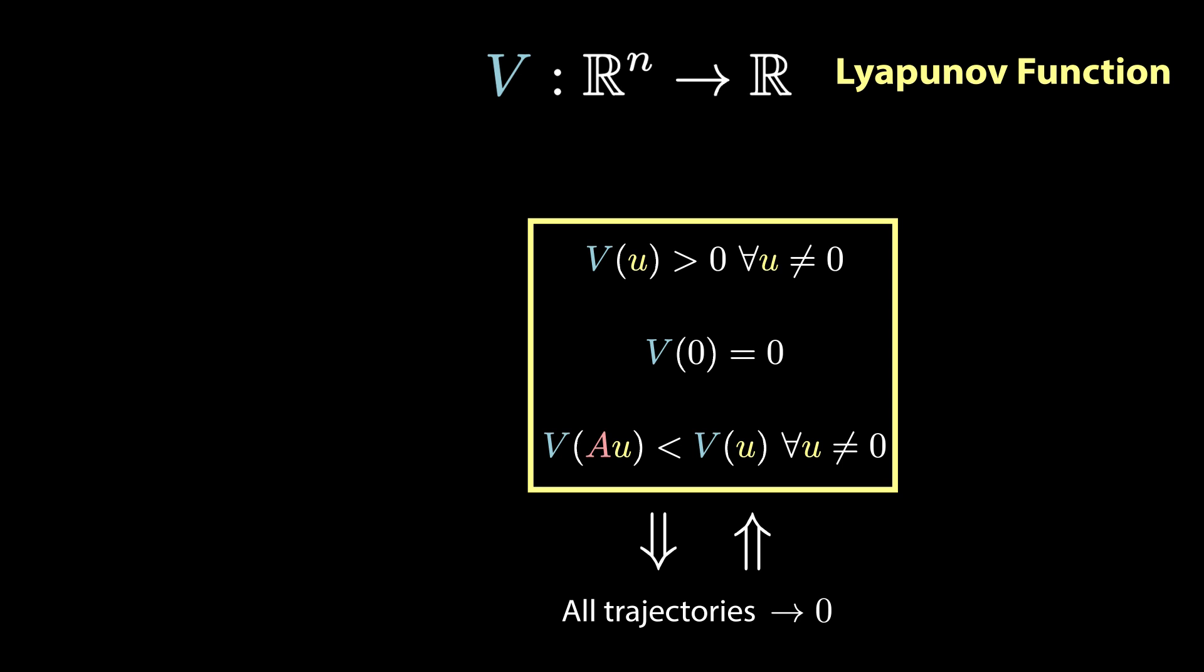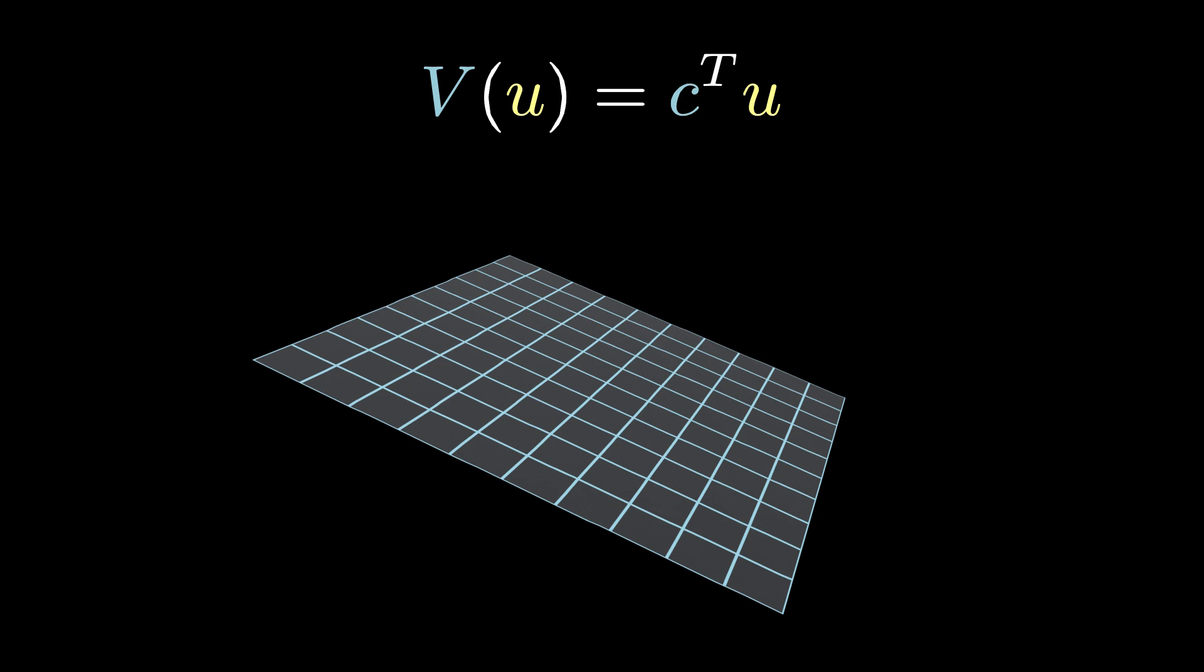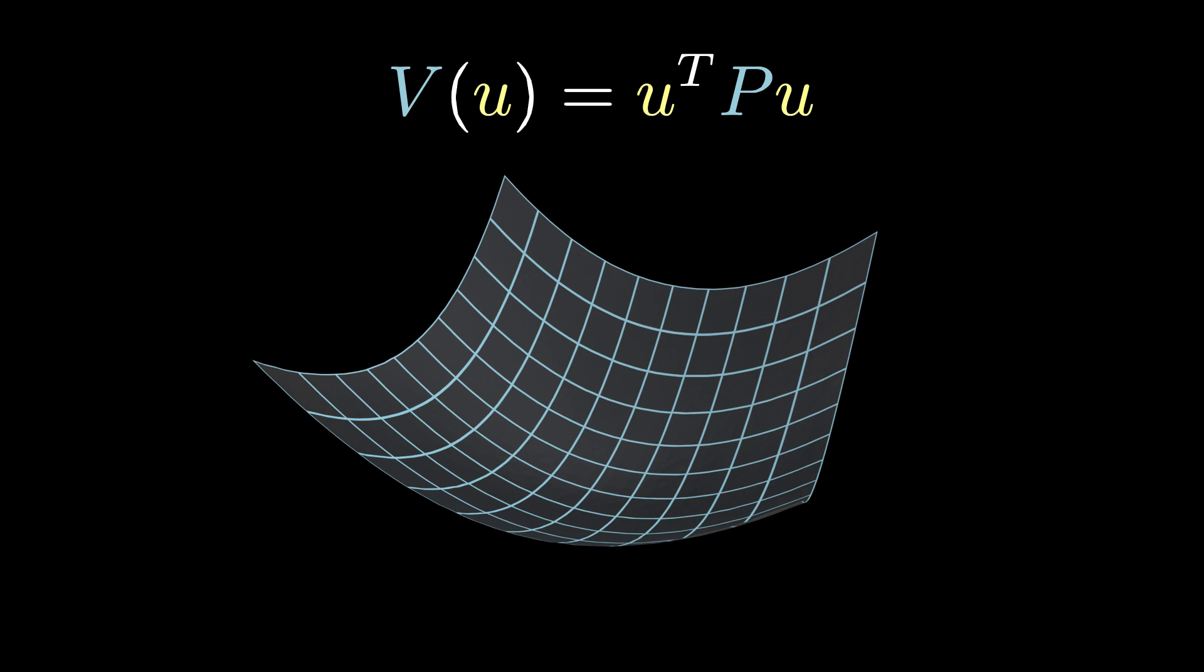To search for a Lyapunov function v, we need two insights. First, we will assume that v is as simple as possible, but not any simpler than that. For example, we cannot take v itself to be a linear function because linear functions take negative values. We can try quadratic functions though, or in other words, functions of the form u transpose pu for some matrix p.